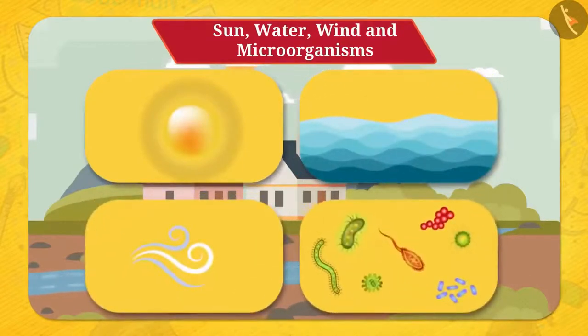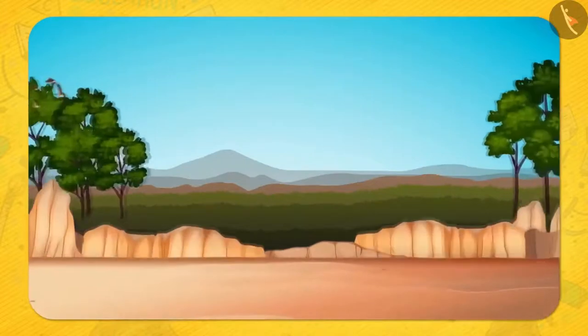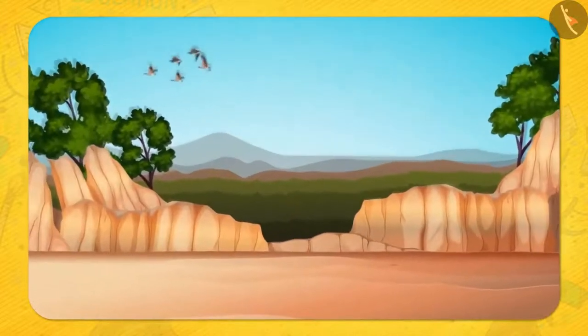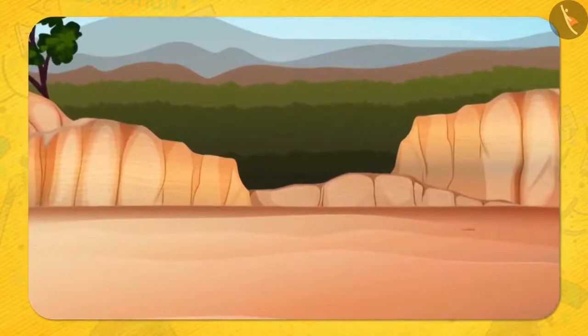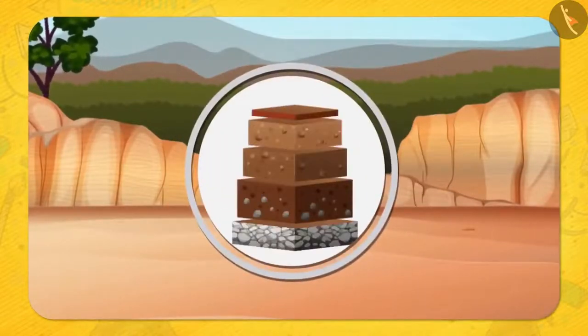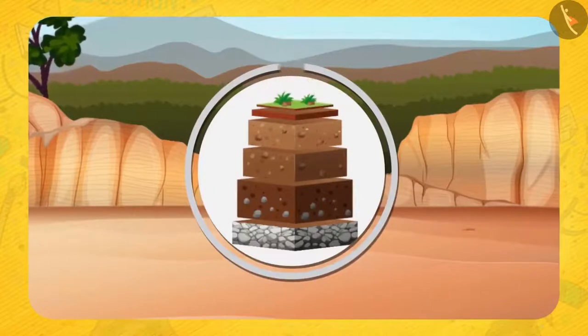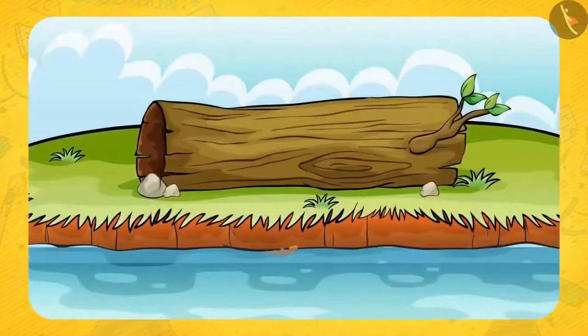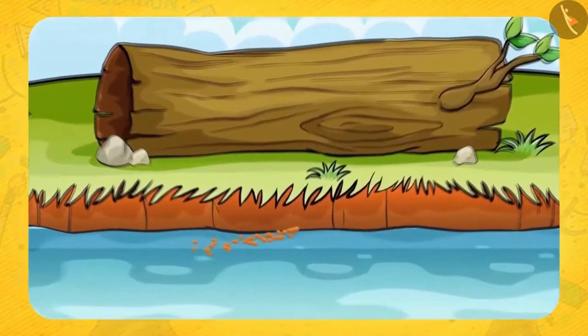So in this way, due to the effect of sun, water, wind, and microorganisms, larger rocks get converted into smaller and smaller parts and ultimately soil is formed. Friends, what can you tell by looking at the soil around you? In how many days will it be made? It takes years to form a thin layer of soil. Flowing water or wind can take away the small soil particles with them and can deposit them at some place.